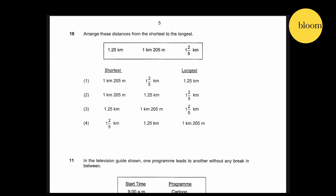Question 10: Arrange these distances from shortest to longest. 1.25 km is 1 km 250 m. 2/5 of a kilometre equals 2/5 times 1000 m, which equals 400 m, so that is 1 km 400 m — wait, that's just 400 m. Shortest to longest: 1 km 205 m, followed by 1.25 km, followed by 1 and 2/5 km. So this is the answer.